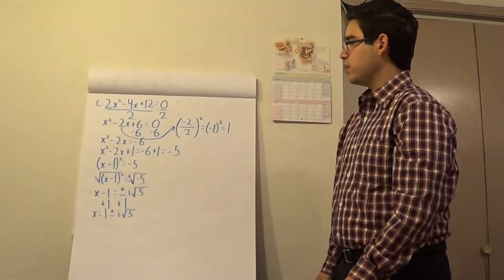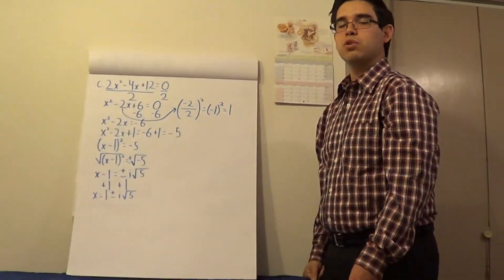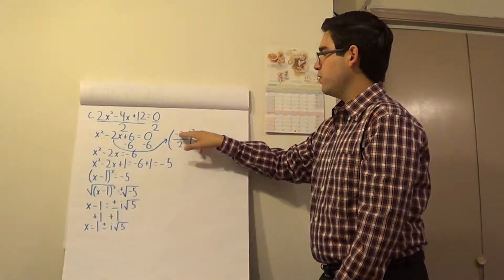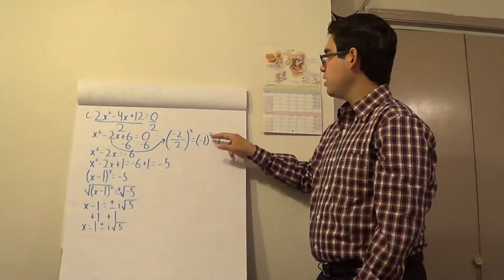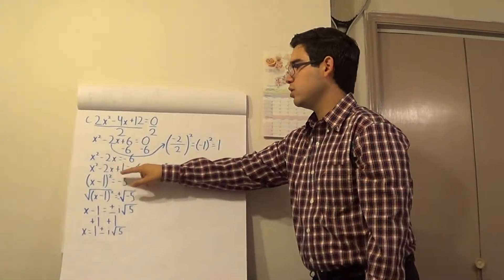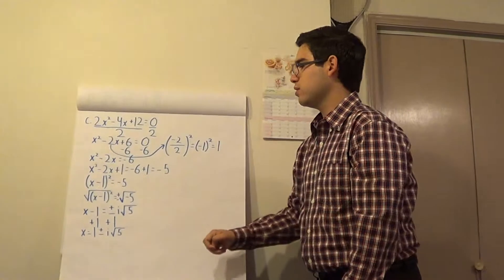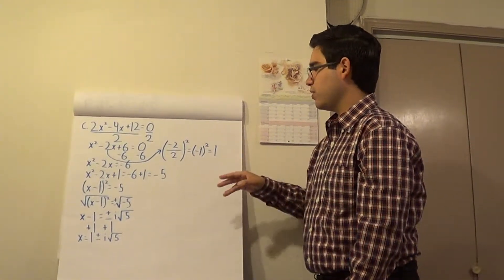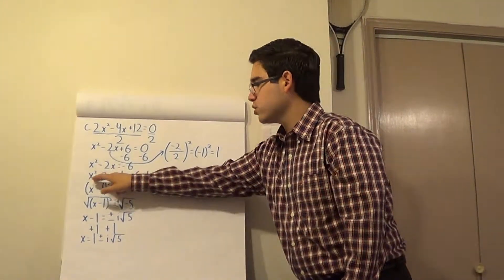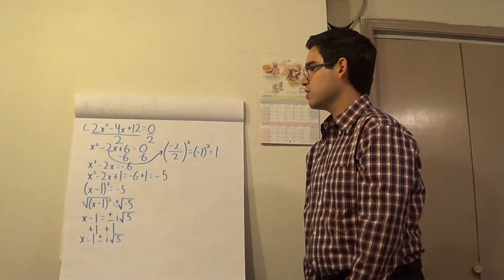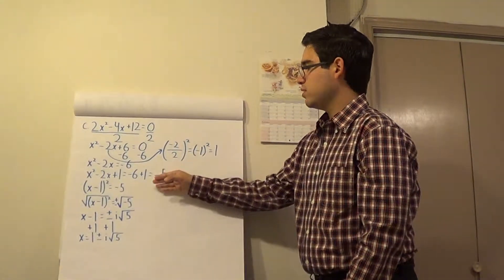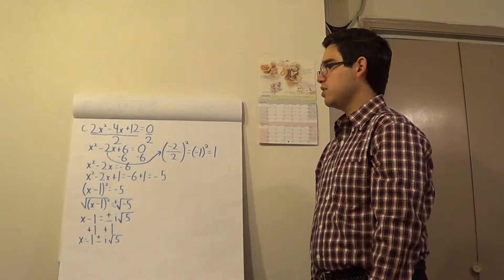Like before, we want a number that when added to this side gives a perfect square. To get that number, look at negative 2: divide by 2 to get negative 1, and square that to get 1. By adding 1 to the left side we get a perfect square — x minus 1 squared. And to keep the equation balanced, we also add 1 to the right side. So we have x squared minus 2x plus 1 is equal to negative 6 plus 1, which equals negative 5. The equivalent equation is x minus 1 squared is equal to negative 5.